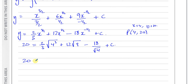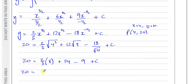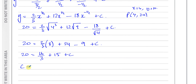Now, the square root of 4 is 2, and 2 cubed is 8. So 20 equals 2 thirds times 8, plus 12 times 2 which is 24, minus 18 divided by 2 which is 9, plus c. That gives 20 equals 16 over 3, plus 24 minus 9, which is 15, plus c. So c equals 20 minus 15 minus 16 over 3, which is 5 minus 16 over 3, giving 15 over 3 minus 16 over 3. Therefore c equals negative 1 third.